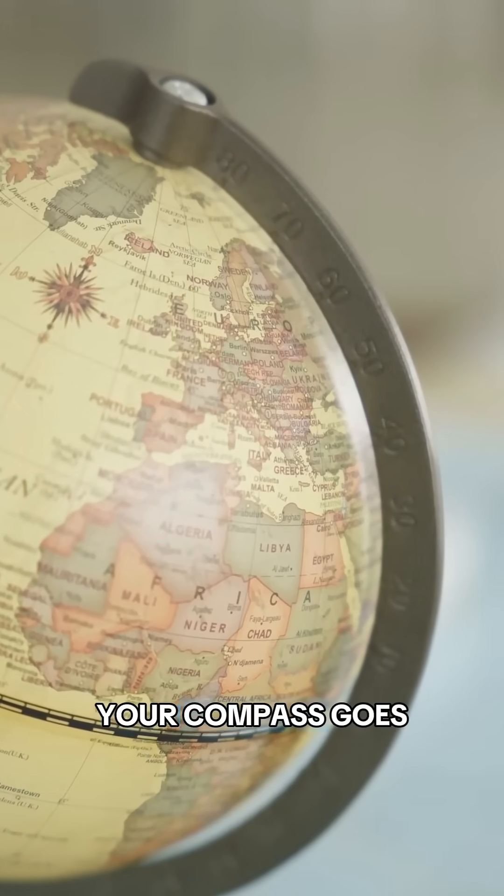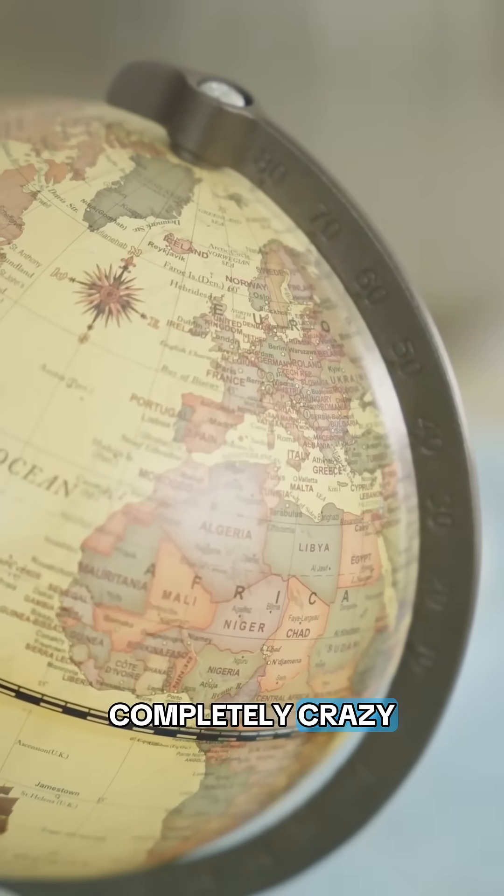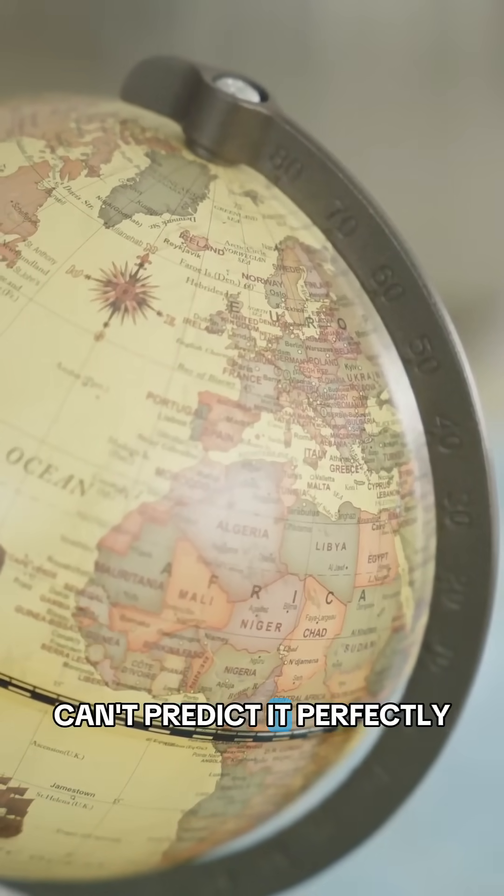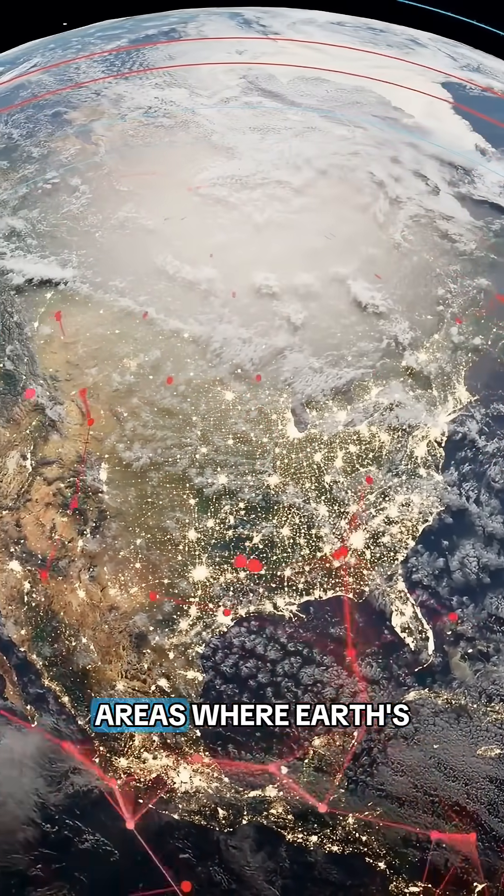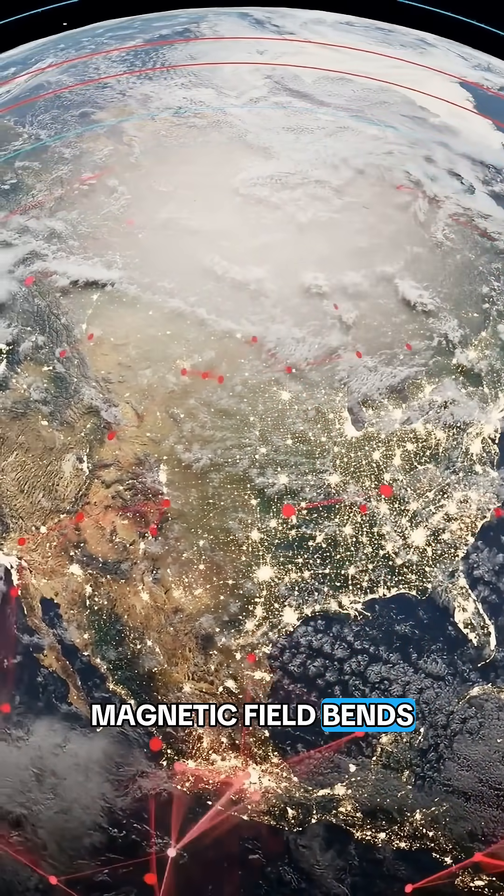There's a place on Earth where your compass goes completely crazy, and scientists still can't predict it perfectly. This happens near powerful magnetic anomalies, areas where Earth's magnetic field bends or intensifies.